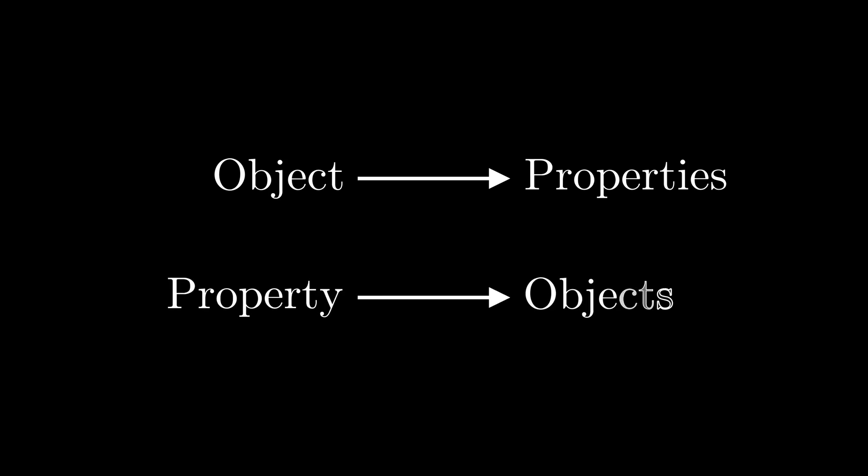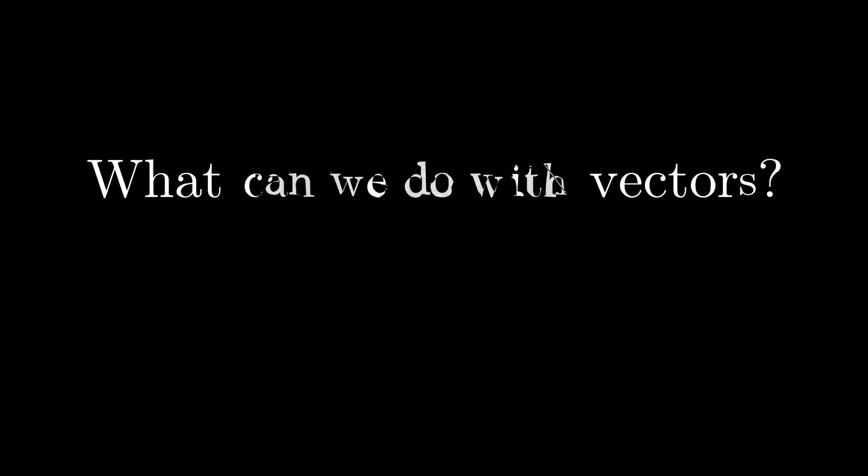Traditionally, when doing math, we start with an object and then find the properties of that object. However, in modern math, we often switch this around. Instead, we like to start with a property and then find what objects satisfy this property. In light of this idea, instead of asking what is a vector, we should instead ask, what can we do with vectors?